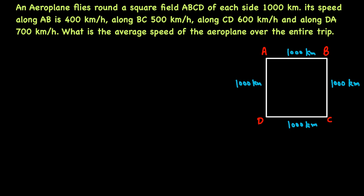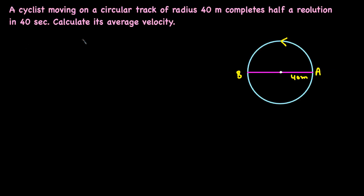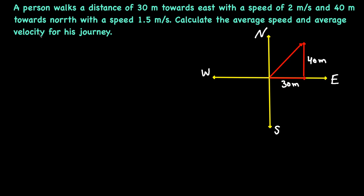The first example is an aeroplane flying around a square field. The second is a cyclist moving on a circular track where we'll find the average velocity. The third is a situation where a person walks in different directions and we need to find both the average speed and average velocity.